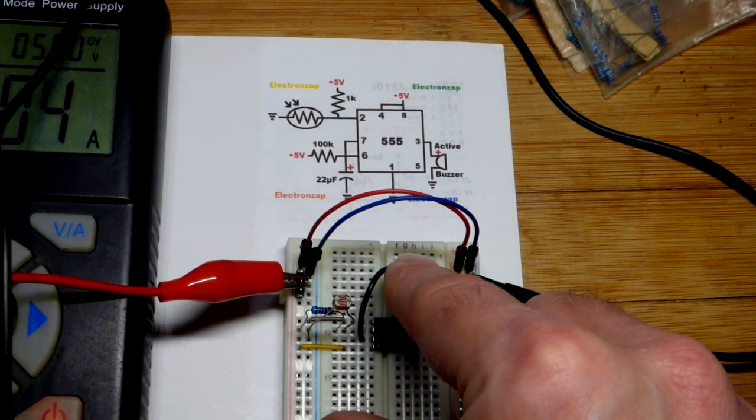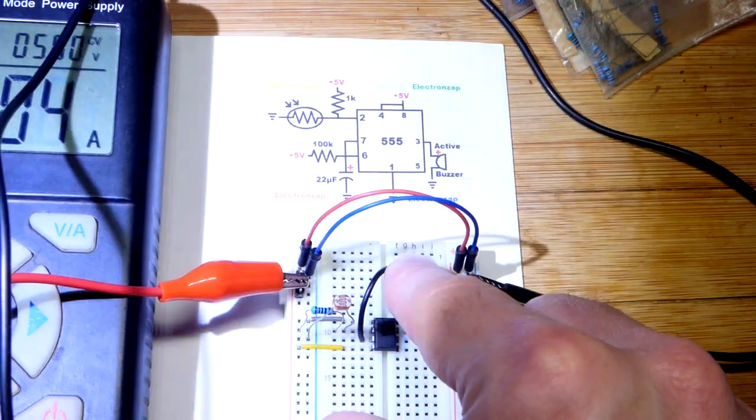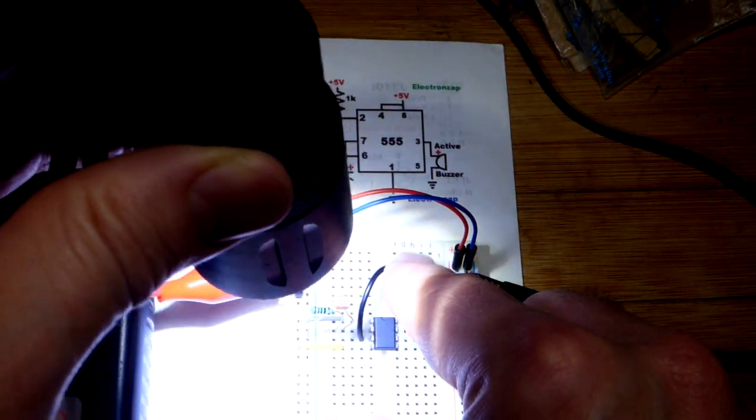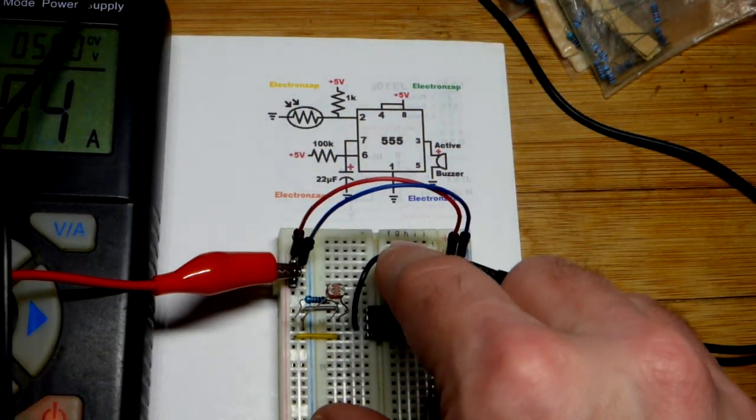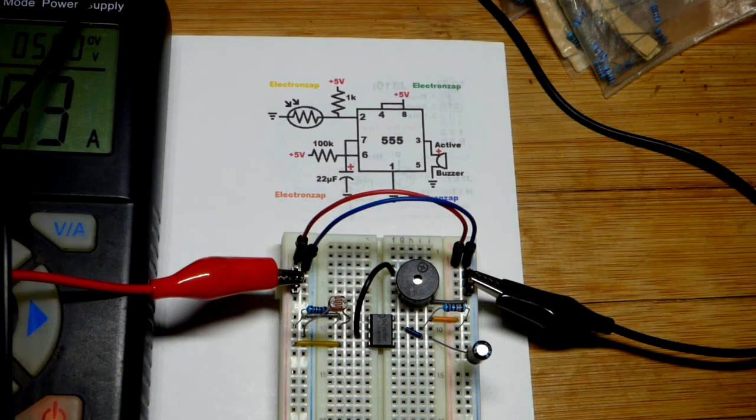And the timing is set by the capacitor and resistor, but if I keep the light on it, it's going to stay buzzing as long as the light's on there, if it exceeds the timing right there.